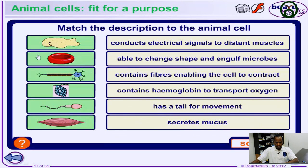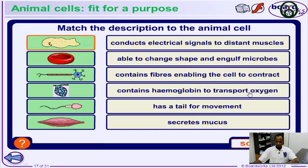Let's match the images of the various cells in the human body with their functions. We're going to look at descriptions of these animal cells and match each one to a function: Does it conduct electrical signals to distant muscles? Does it change shape and engulf microbes? Does it contain fibers enabling the cells to contract? Does it contain hemoglobin to transfer oxygen? Does it have a tail to swim? Does it secrete mucus? It does secrete mucus — meaning it's able to change shape and engulf microbes.